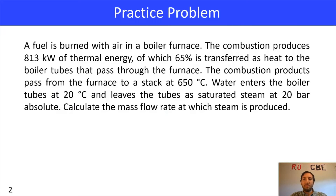We've got our practice problem here, where a fuel is burned with air in a boiler furnace. The combustion produces 813 kilowatts of thermal energy, of which 65% is transferred as heat to the boiler tubes that pass through the furnace. The combustion products pass from the furnace to a stack at 650 degrees Celsius. Water enters the boiler tubes at 20 degrees Celsius and leaves the tubes as saturated steam at 20 bar absolute. Calculate the mass flow rate at which steam is produced.